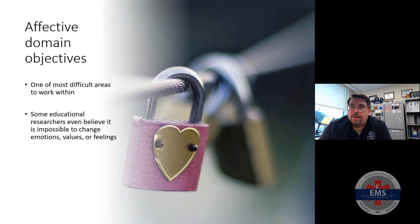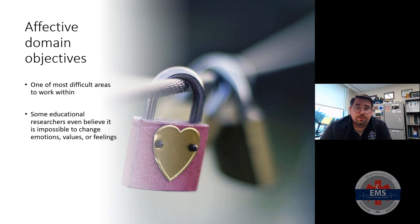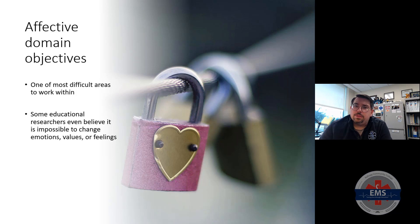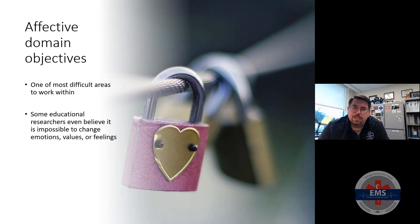The affective domain objectives are, in essence, using your heart. It's one of the most difficult areas to work within — some researchers believe it's almost impossible to have an impact on someone's emotions, values, or feelings. But it's important. To summarize the three domains: cognitive is your head, affective is your heart, and psychomotor is your hands. That's a great way to keep those concepts relatively simple.